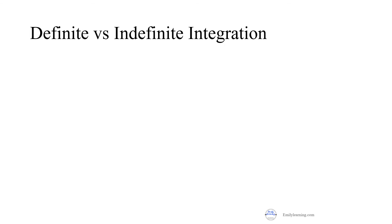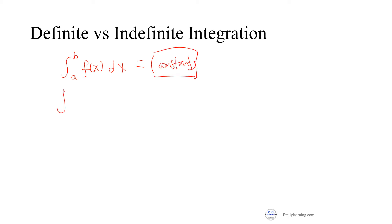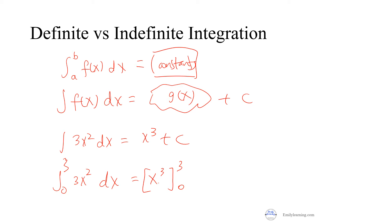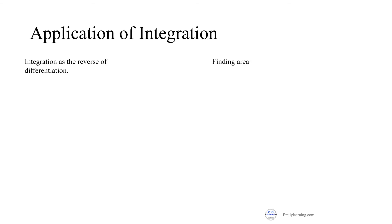For definite integrals, you have limits a and b on the integral sign, and your final answer will be a constant. For an indefinite integral, the result is an expression in terms of x, for example g(x) + c. For example, integrating 3x² dx gives x³ + c as an indefinite integral. But integrating 3x² from 0 to 3 is a definite integral — you evaluate [x³] from 0 to 3, substitute 3 and subtract the result of substituting 0, giving 27. There is no + c for definite integrals.